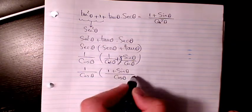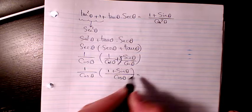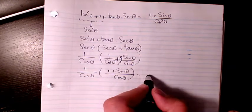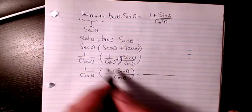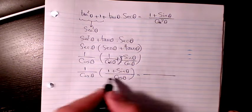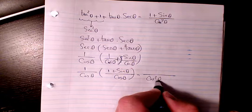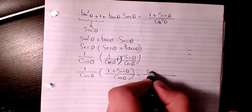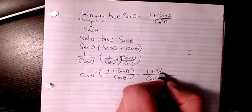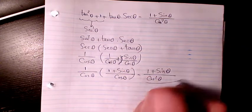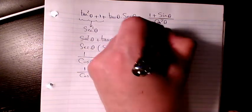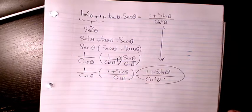Because we have the same denominator, we can add them. So cosine times cosine gives cosine squared theta in the denominator, and we have 1 plus sine theta in the numerator. And as you see here, that's verified.